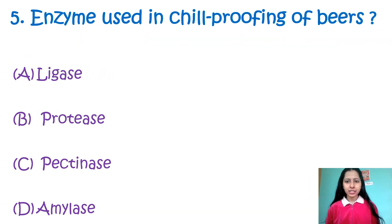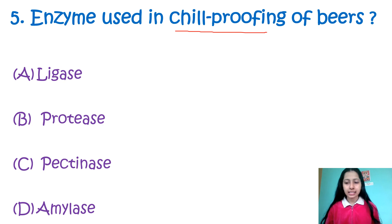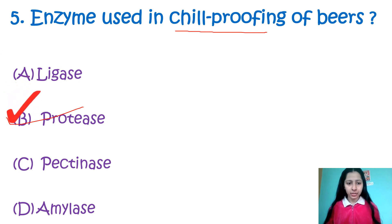Question number 5: Enzyme used in chill proofing of beers — Option A: lyase, Option B: protease, Option C: pectinase, Option D: amylase. Chill proofing is a term used in beer industries. When beer production happens, there are chances of haziness developing inside it. To protect that clarity and enhance its brightness, an enzyme is used. That enzyme is protease, used at a temperature below zero degree Celsius. So my correct option is option number B, protease.